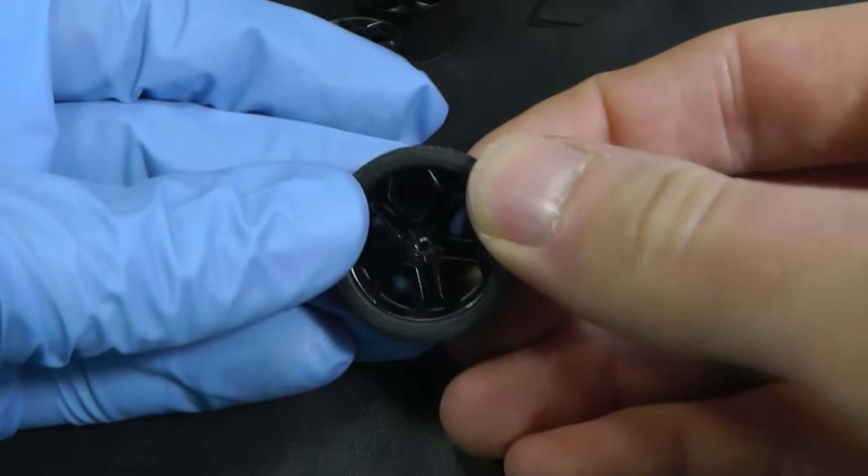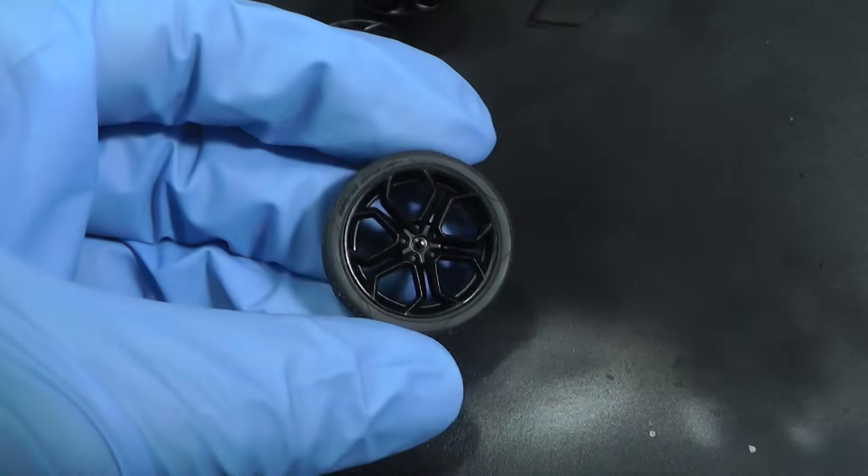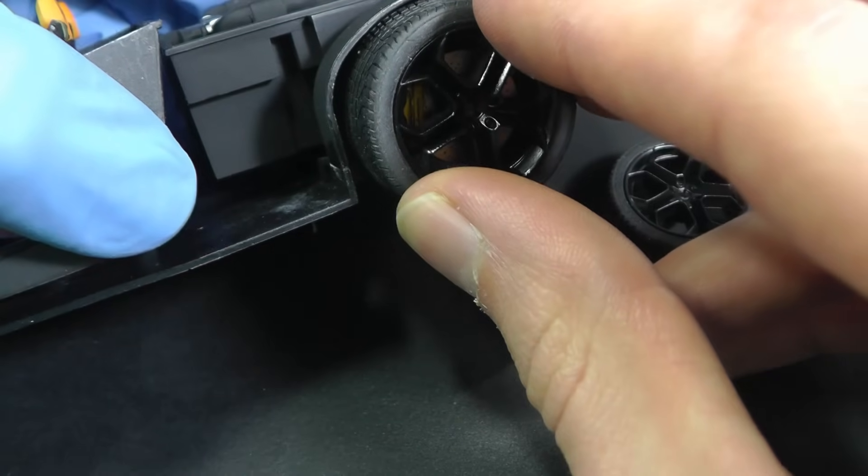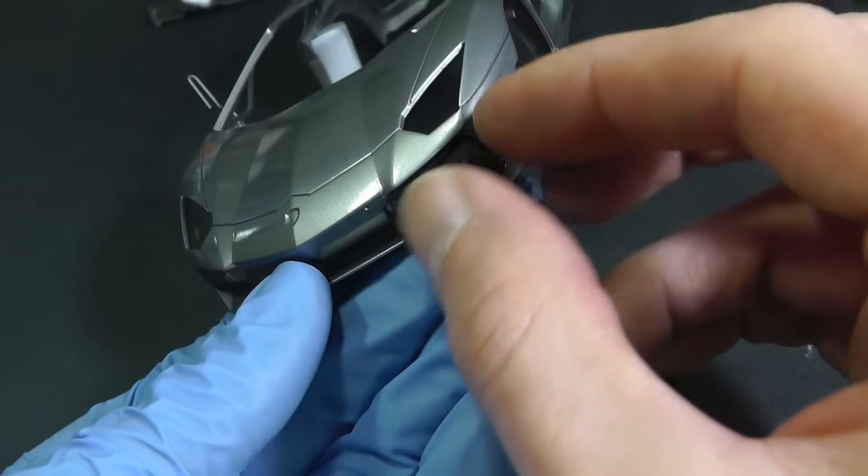The model is almost finished. Now I only assemble wheels and glue small details. I prefer for gluing PVA glue because if you accidentally touch the body, you can simply clean glue with water.